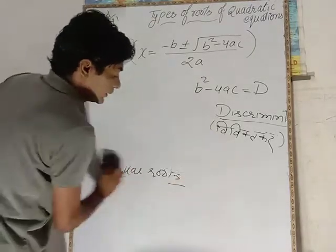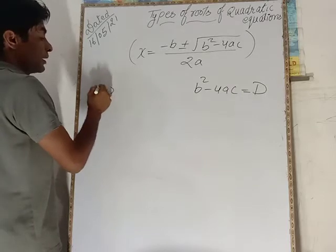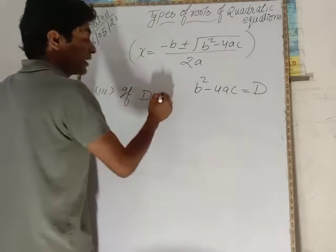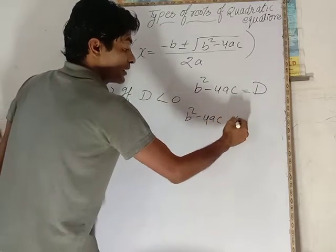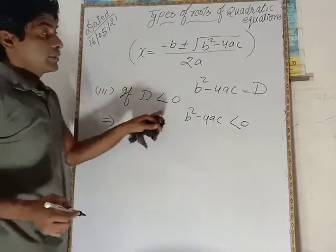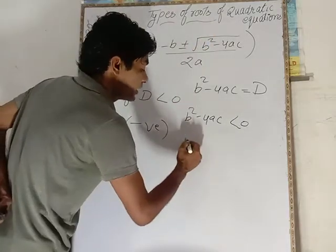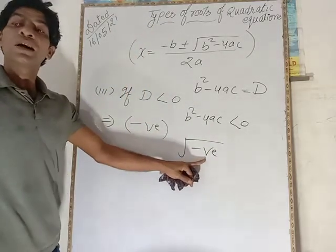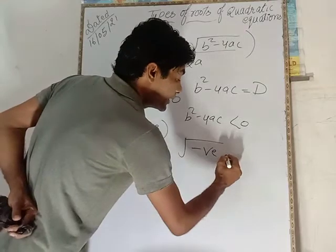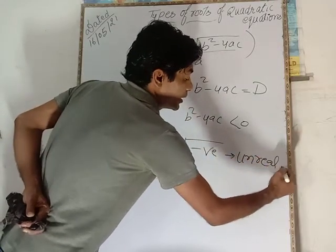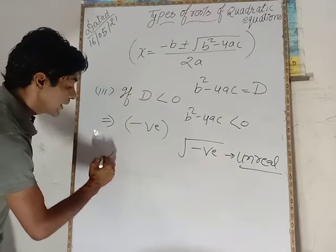Third one. In third case, if discriminant is less than zero, means b squared minus 4ac is less than zero. If it is less than zero, it will be negative. And if it is negative, that cannot be calculated, that cannot be real, that cannot be mathematically relevant. It means when discriminant is less than zero, then the system will have imaginary roots - alpha and beta.